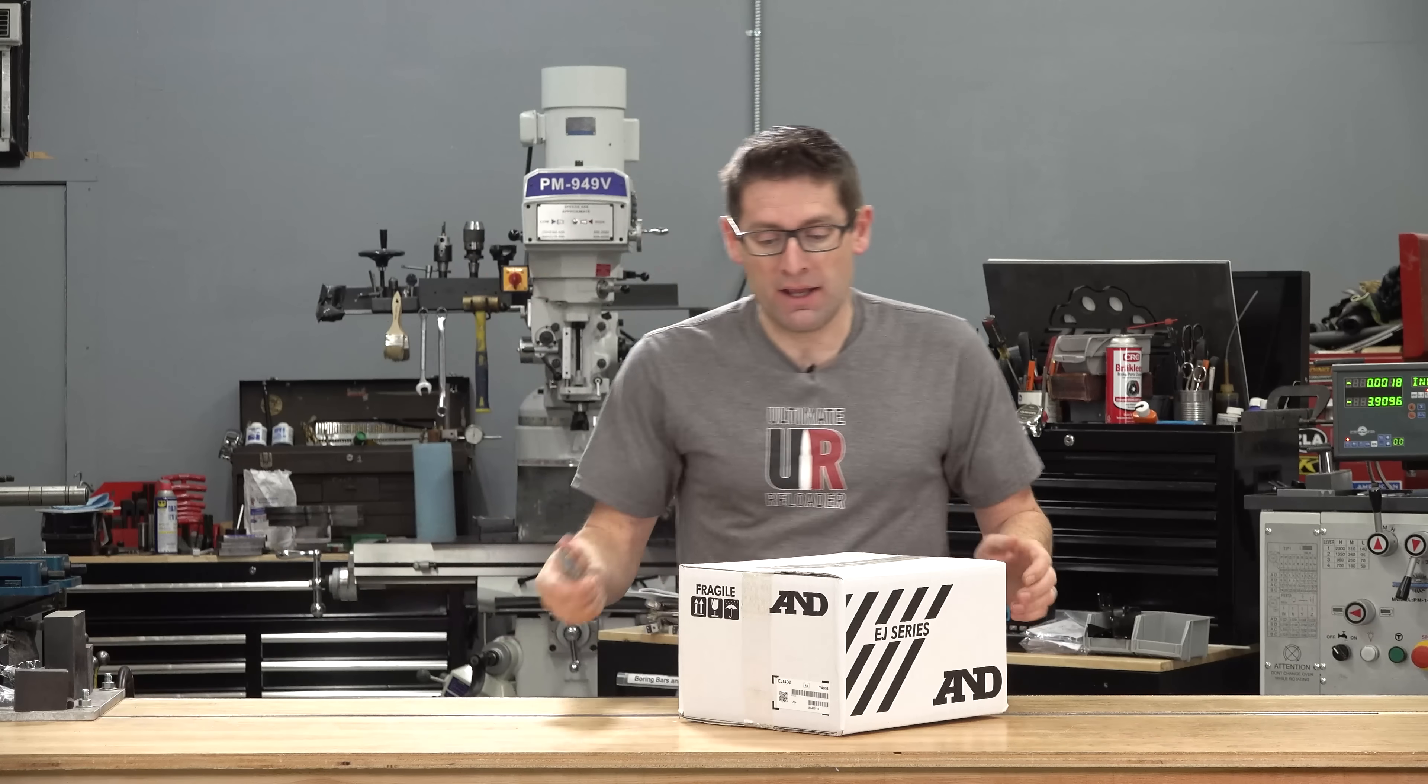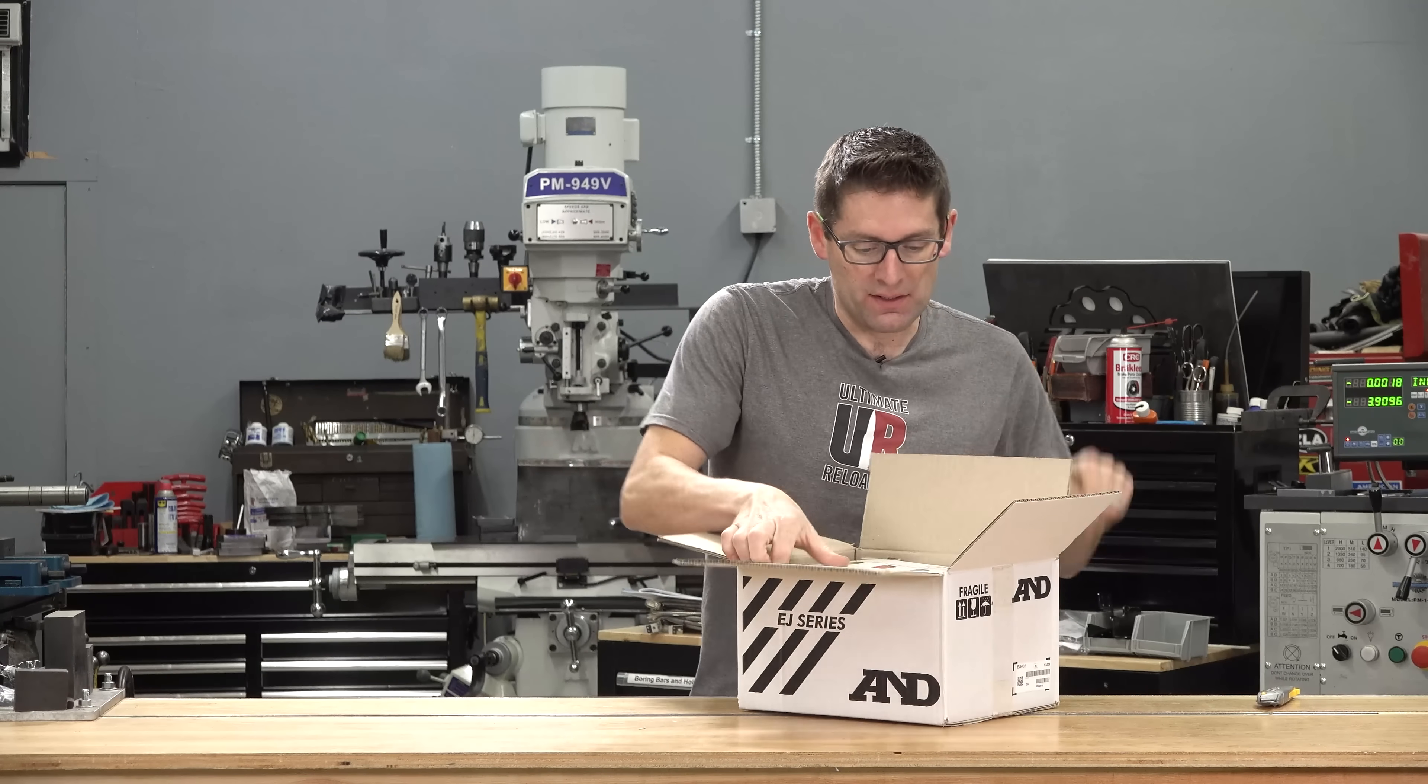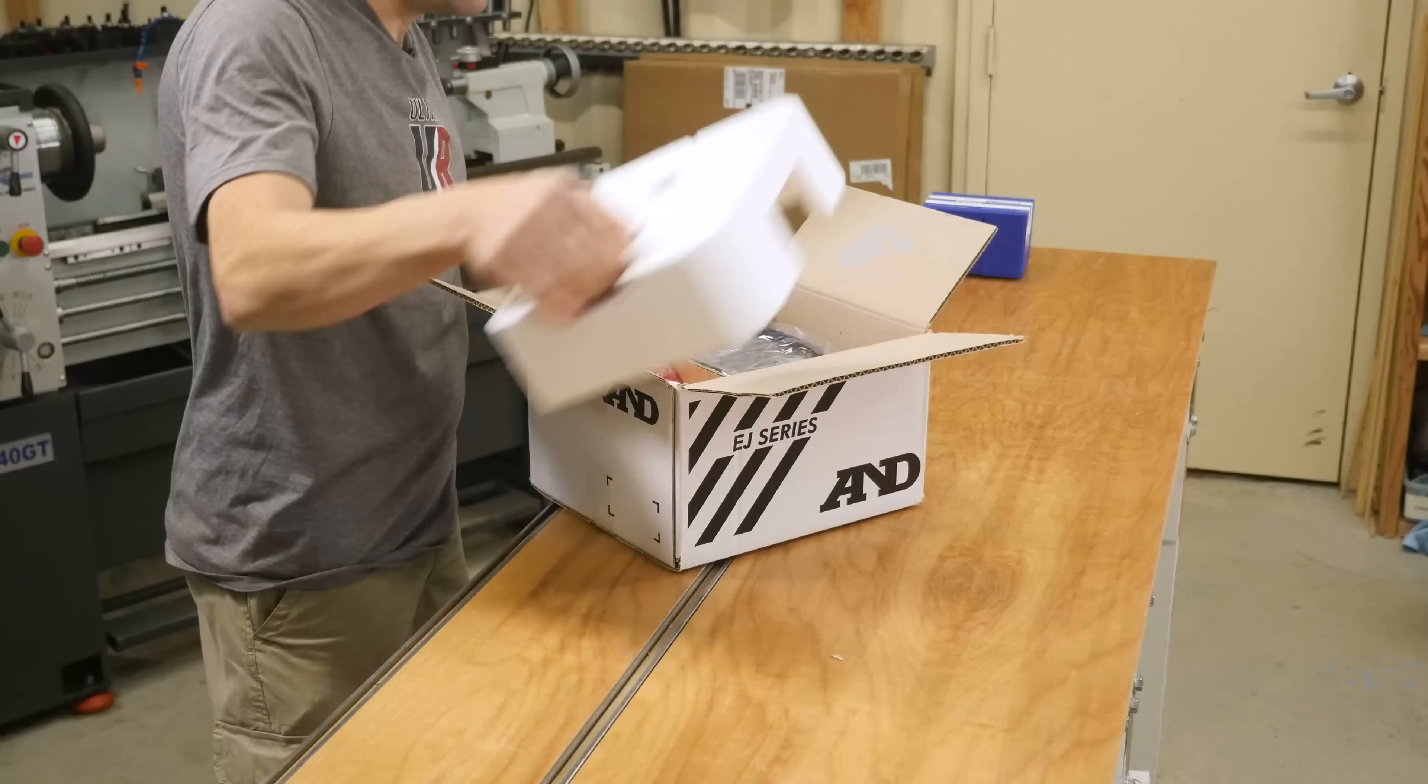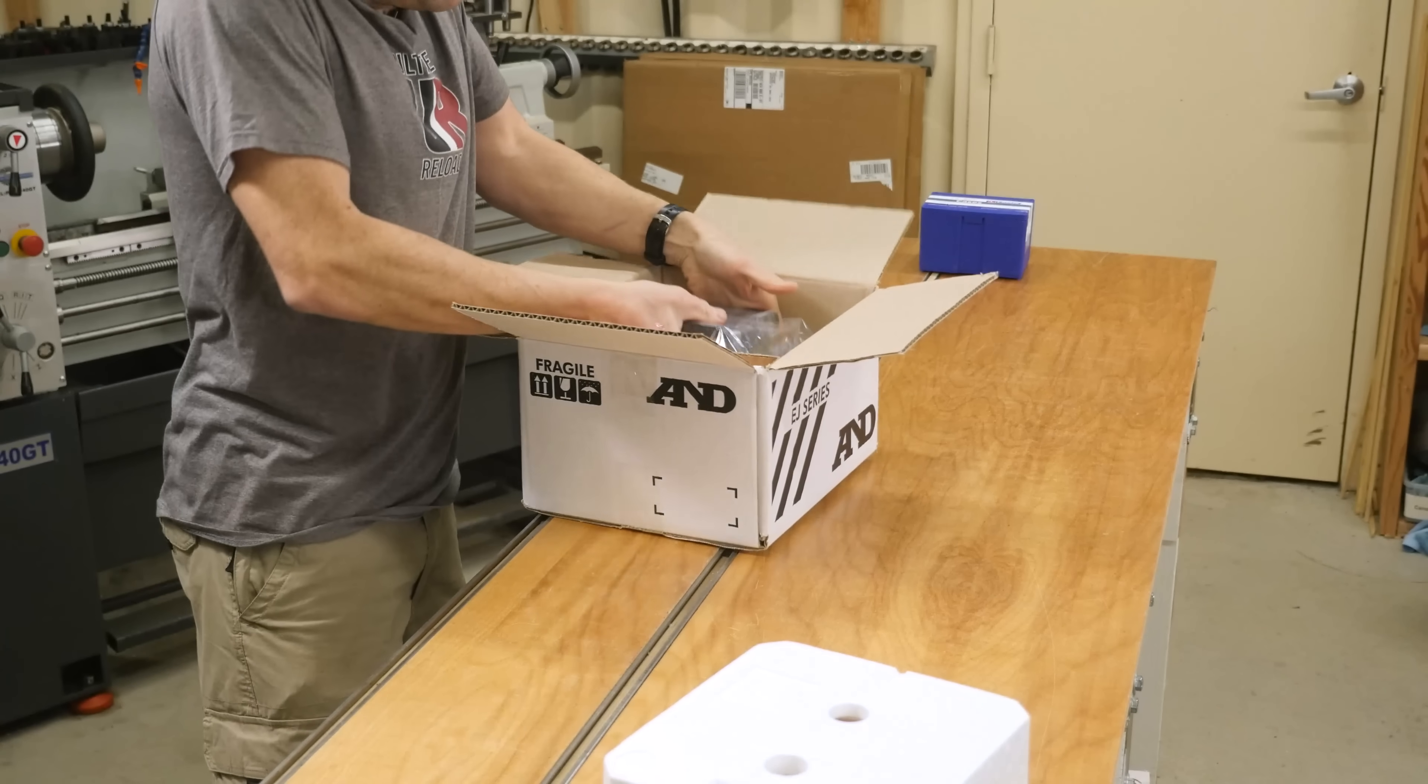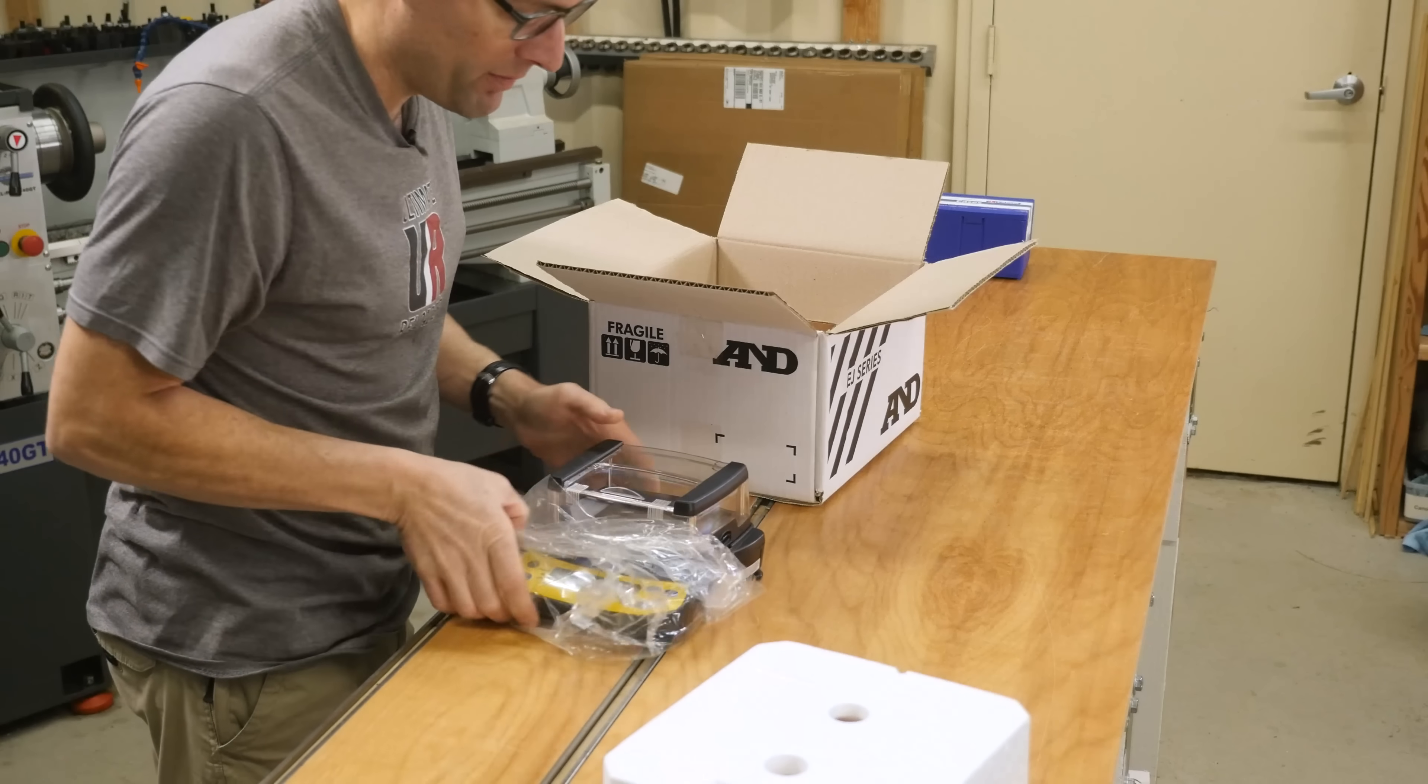I'm going to go ahead and get this box open. Cambridge Environmental is a great place to buy your precision scales. We've got some styrofoam crating here that is cradling the scale. Here's the scale itself. Got an open end of the bag. There we have the scale.